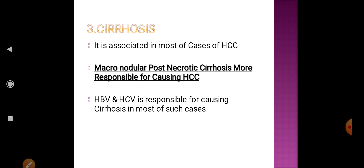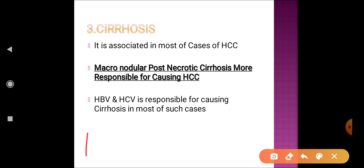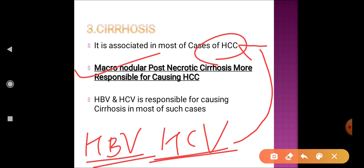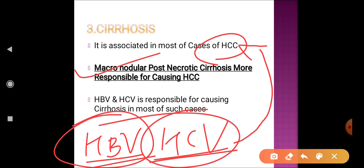The third etiological factor is cirrhosis. Both hepatitis B virus and hepatitis C virus can cause cirrhosis of the liver, and subsequently lead to development of hepatocellular carcinoma. Macronodular post-necrotic cirrhosis after these two infections is responsible for development of hepatocellular carcinoma.